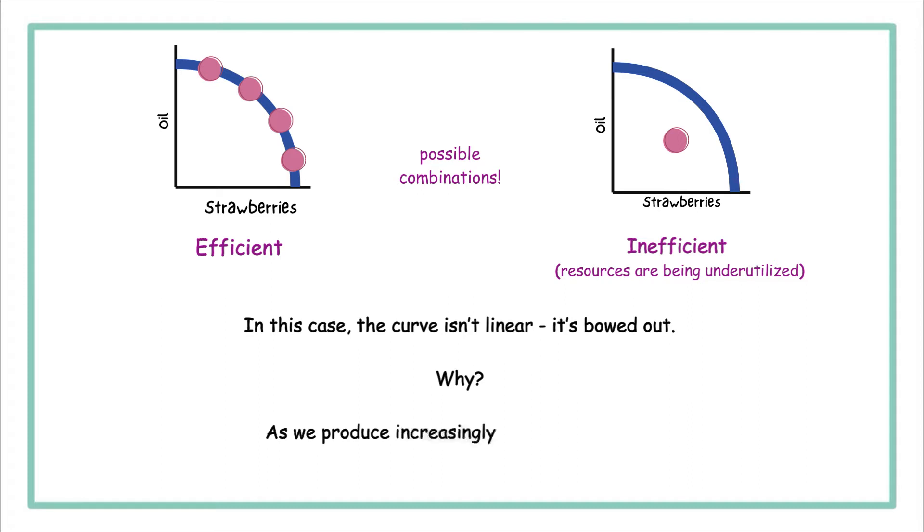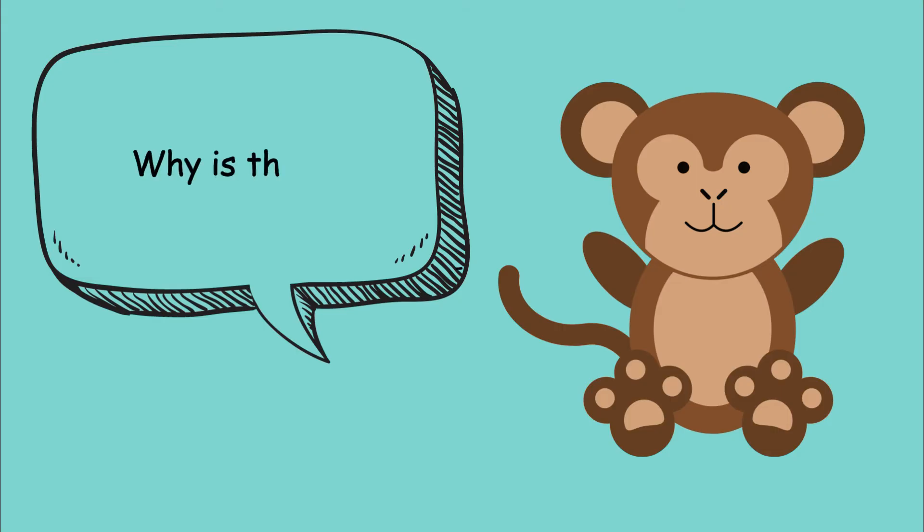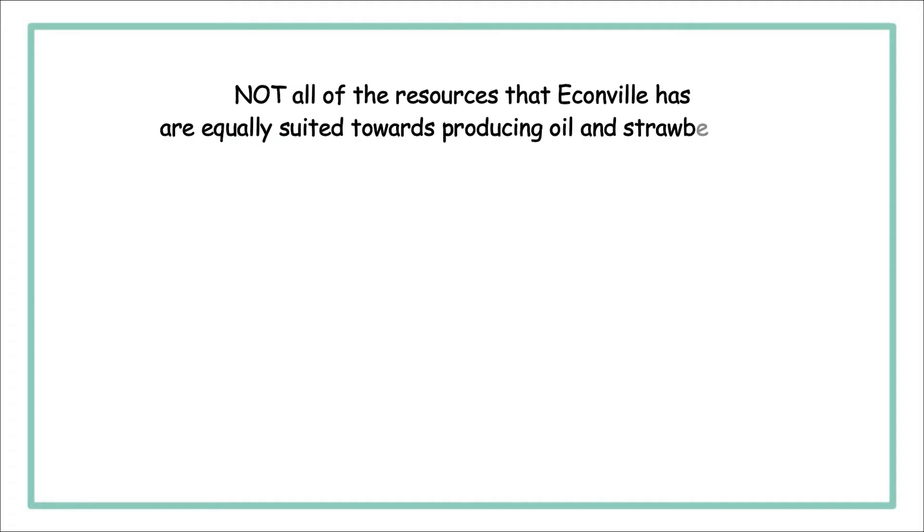As we produce increasingly more of a good, we are giving up the other good in greater amounts. Why is that?